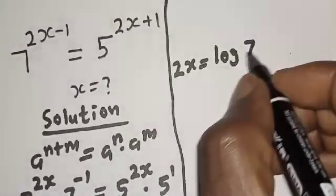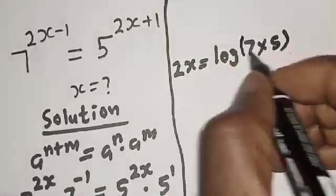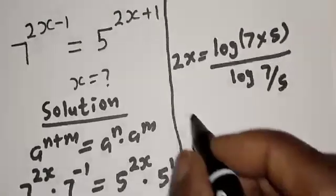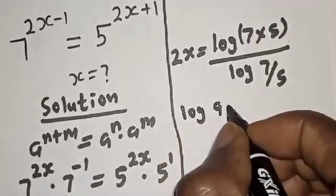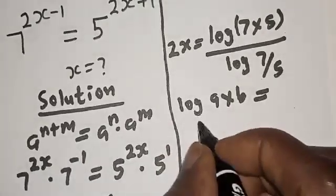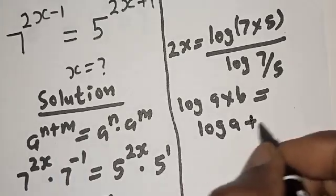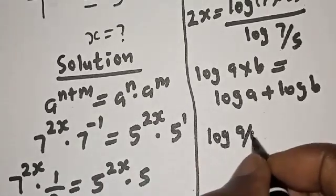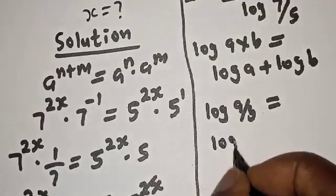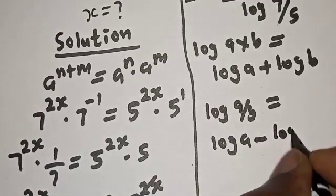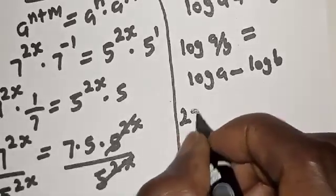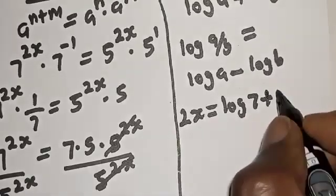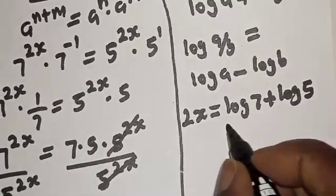Take note of this rule: if you have log a times b, this is equal to log a plus log b. Also, if you have log a over b, this is equal to log a minus log b. So 2s is equal to log 7 plus log 5, over log 7 minus log 5.